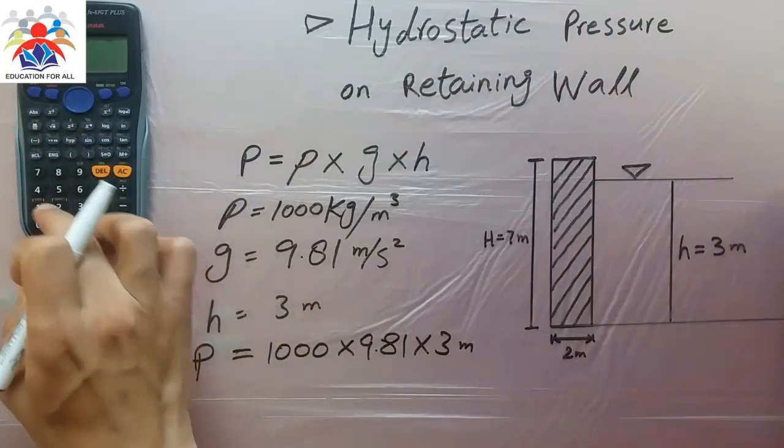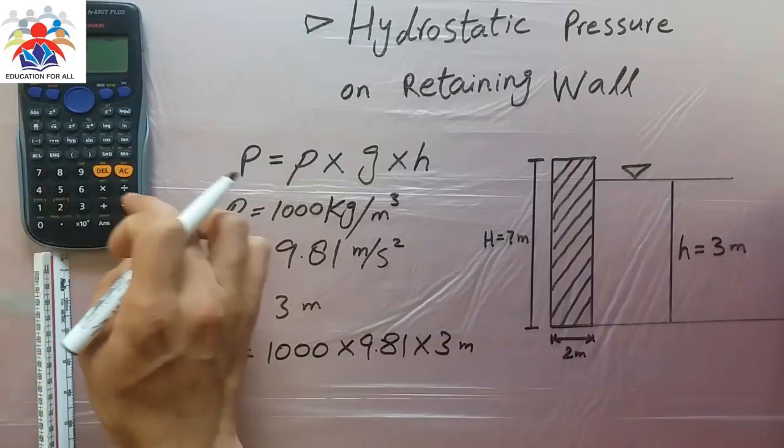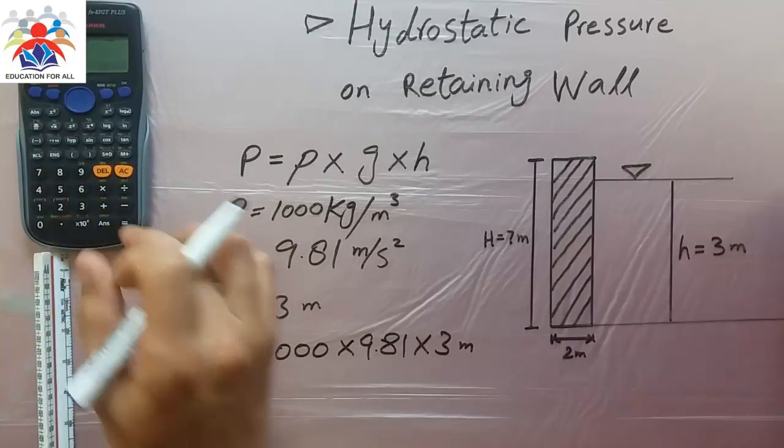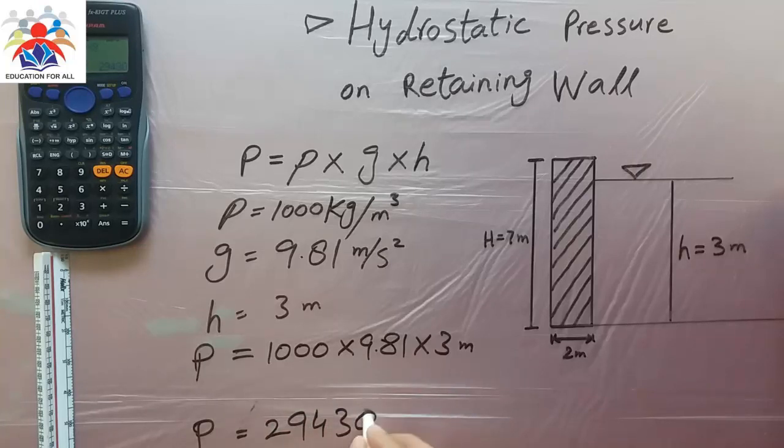The answer we will get 1000 multiplied by 9.81 multiplied by 3. The final answer, the pressure on wall would be 29,430 kilogram per meter.